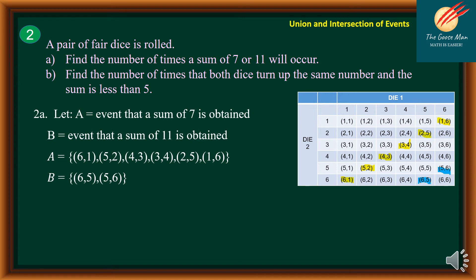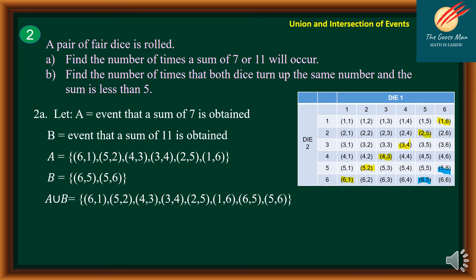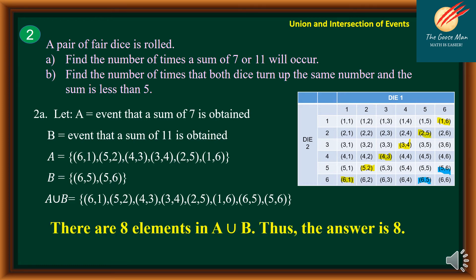Therefore, to find A union B, we combine: (6,1), (5,2), (4,3), (3,4), (2,5), (1,6), (6,5), and (5,6). We can say that there are 8 elements in A union B. Thus, the answer is 8.